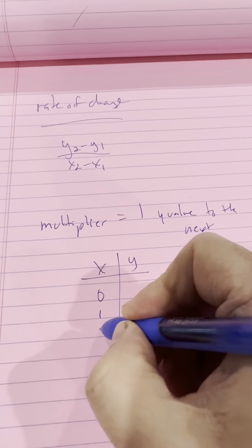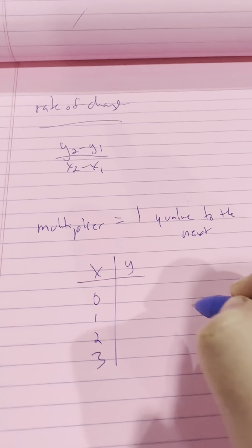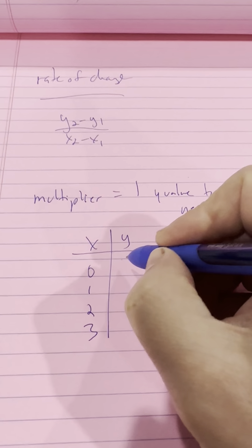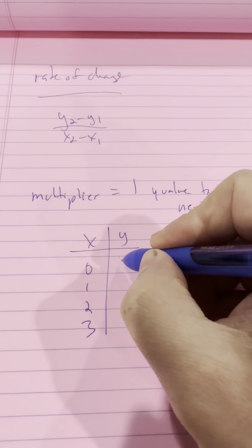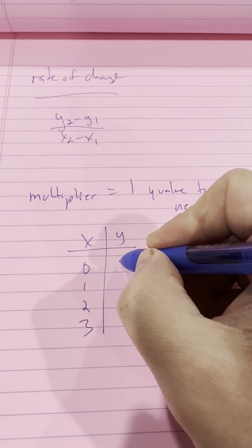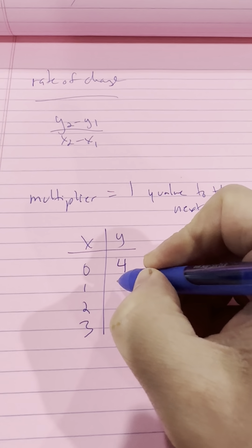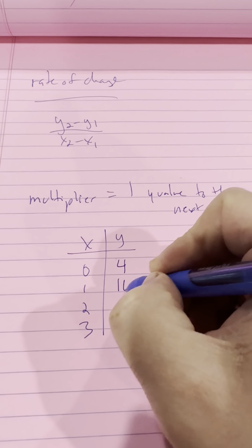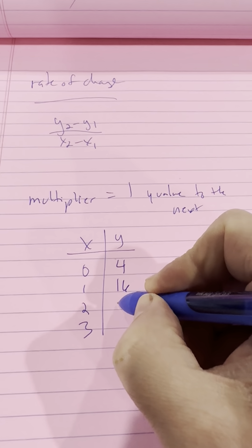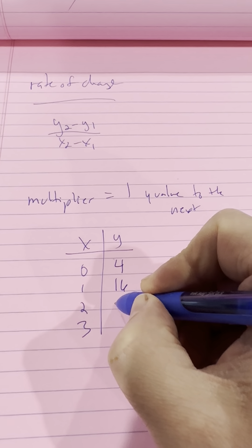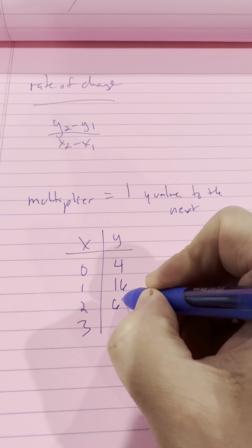You're going to have rate of change. I hope you know how to do that. The formula is y2 minus y1 over x2 minus x1 — that formula will be given to you.